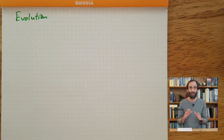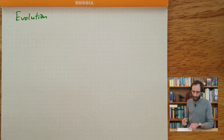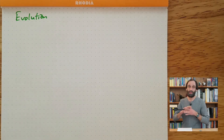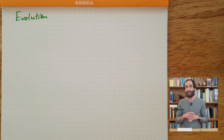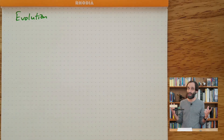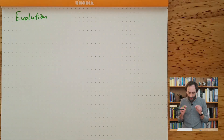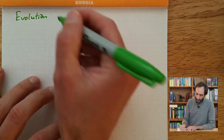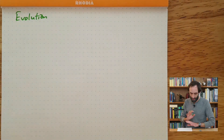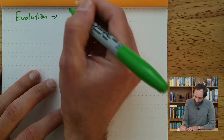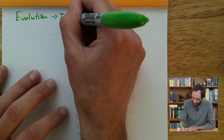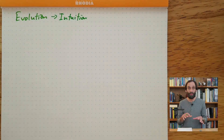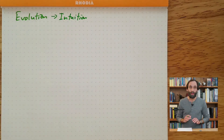Now that might seem like a strange place to start a geometry course. But basically, what I want you to understand is that geometry, like all of mathematics, is a human creation. Evolution is the mechanism that created us into the intelligent beings that we are, enabling us to be intelligent enough to create a system of mathematics, a system of geometry. So any complete story of geometry really needs to start with evolution. And so what did evolution give us? One thing I want to mention here is intuition.